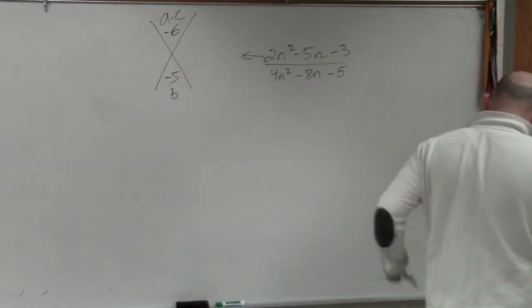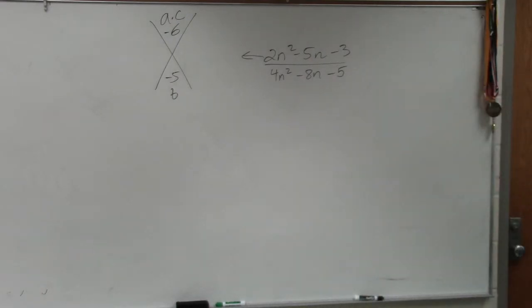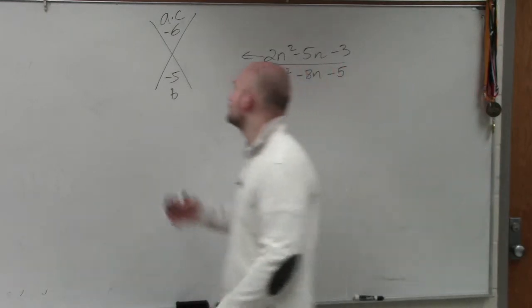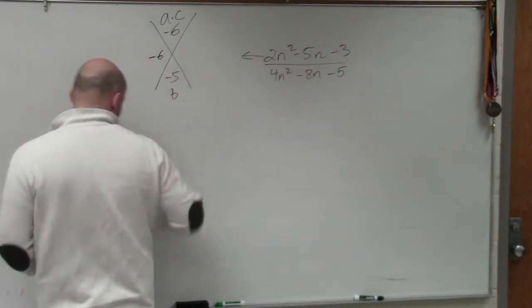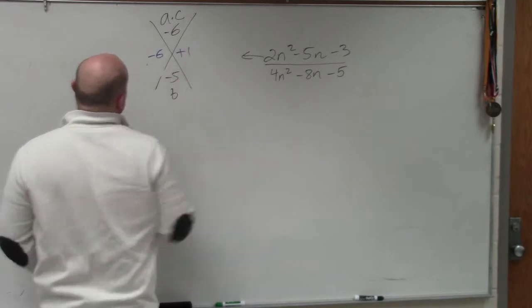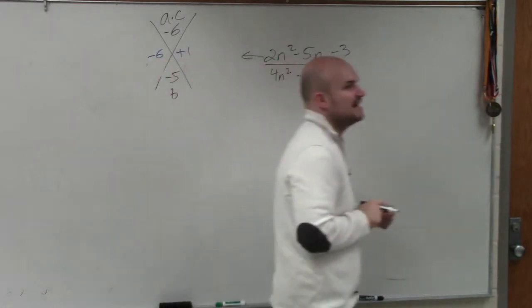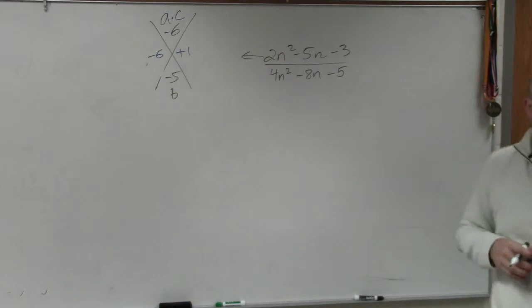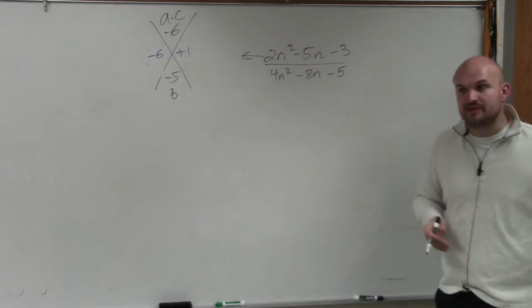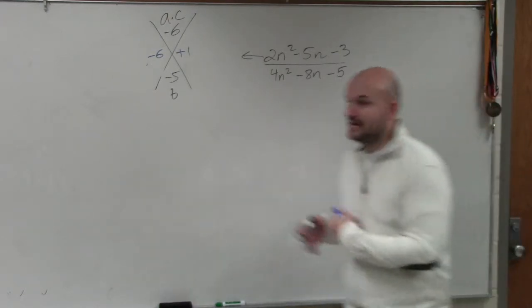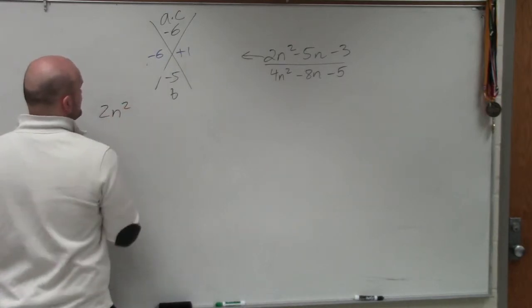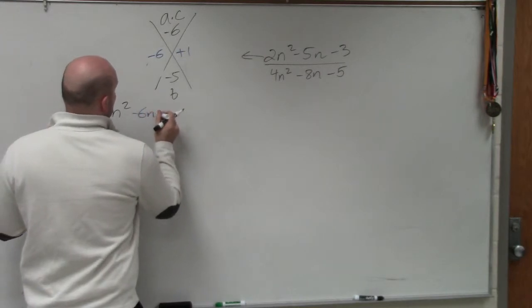Now, what we want to identify is what two terms multiply to give you negative 6, but then add to give you negative 5. Would everybody agree with me that negative 6 times 1 gives you a negative 6? Negative 6 plus 1 gives you a negative 5. Now, if you guys remember, there was two different ways we did this. We could use the factoring technique, or we could use the box technique.